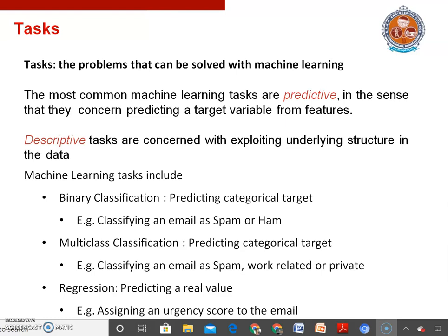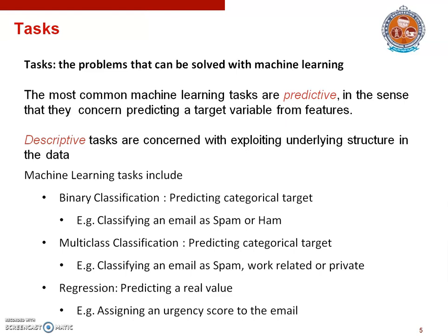Machine learning tasks include binary classification, where we want to predict a categorical target. For example, spam email recognition comes under the binary classification task. One obvious variation is to consider classification problems with more than two classes — for instance, we may want to distinguish different emails into spam and ham.